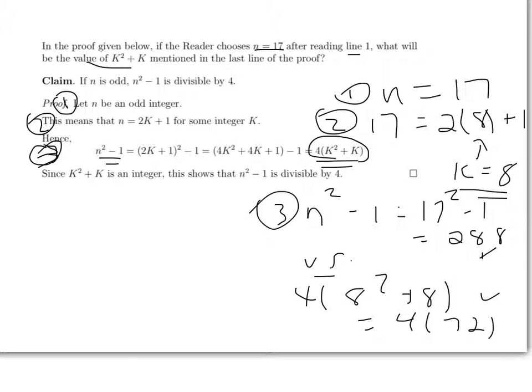The question here says, what's the value of k squared plus k mentioned in the last line of the proof? So in the last line of the proof it says, because k squared plus k is an integer, and of course that's the stuff in parentheses there. Well, if you look at where I checked it, that's this number right here.